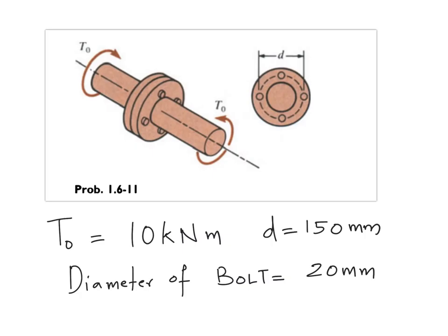The four bolts are all placed on a circle and the circle diameter is 150 mm. The bolts are intended to transfer a torque of 10 kilonewton-meter and the diameter of the bolt is 20 mm. The question is: what is the average shear stress that you are anticipating in your joint?